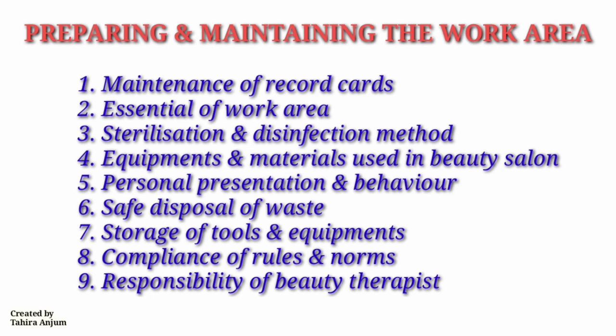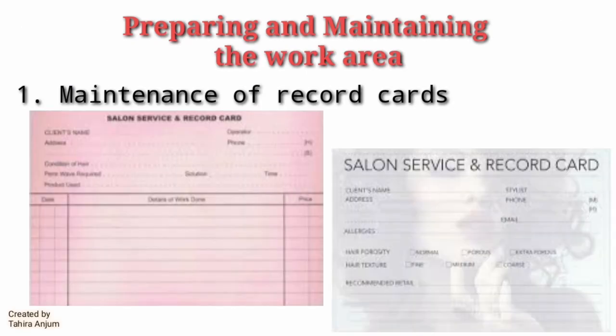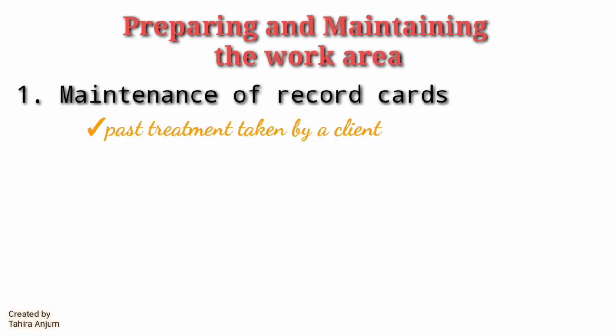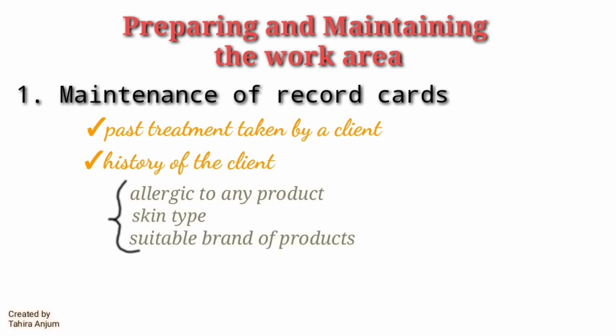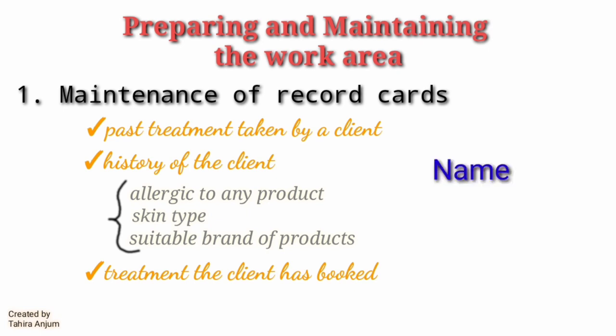Maintenance of record cards: a record card is a very important document maintained in the salon. It contains the full treatment history of the customer, including any allergies, their skin type, and which products suit their skin. We maintain a book where we record the client's name, address, and other details, so when a client comes for treatment, we can check their record card for product allergies or previous treatments.